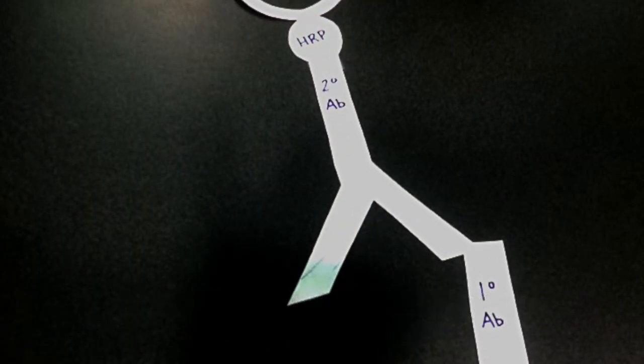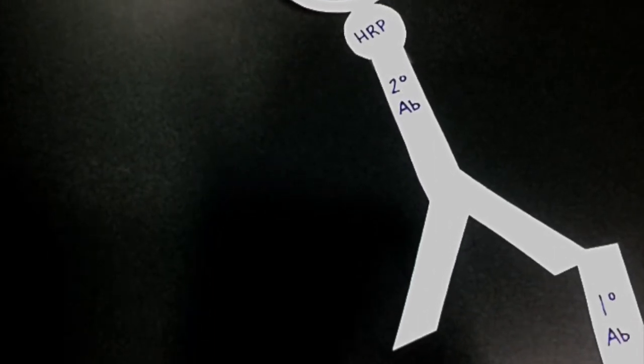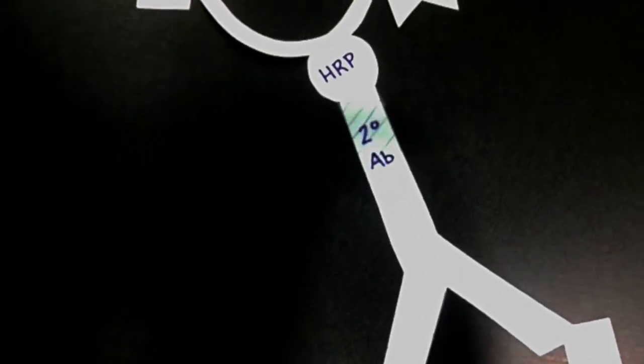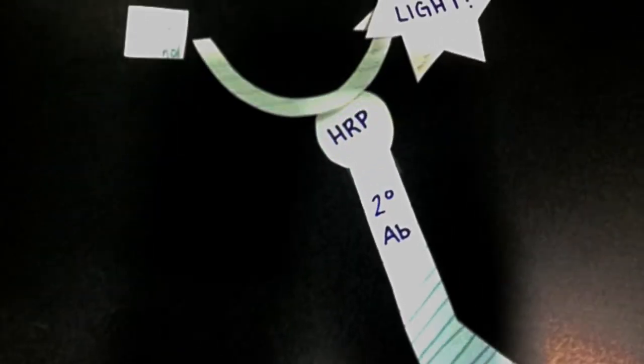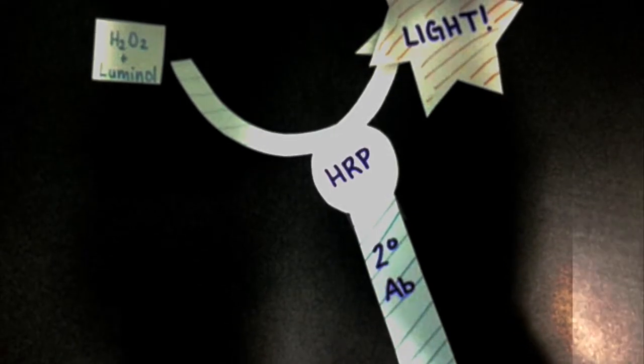The second antibody is generally conjugated to horse-radish peroxidase enzyme, also known as HRP. This HRP will react with a substrate to produce light. This light can be detected upon exposure of your blot to x-ray film.